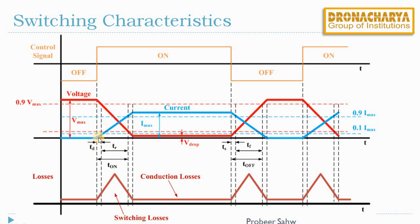The time in which the current rises from its zero value to 10% of its maximum value is known as the delay time. During delay time, the voltage drops from its maximum value to 90% of its maximum value. Then the current further increases from 10% of its maximum value to 90% of its maximum value during the rise time. Though the gate pulse has been applied, the current through the switch establishes only after this time. This entire delay is known as the turn-on time, or t_on, which is the sum of delay time and rise time.